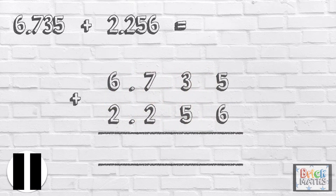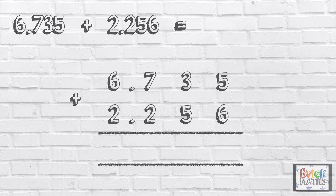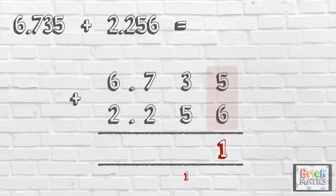Pause the video to give you time to work out the answer. Press play when you're done. So we start with five thousandths add six thousandths, which is eleven thousandths. We carry the one hundredth below in the hundredths column. So now we have the hundredths: three add five add one, which is nine.